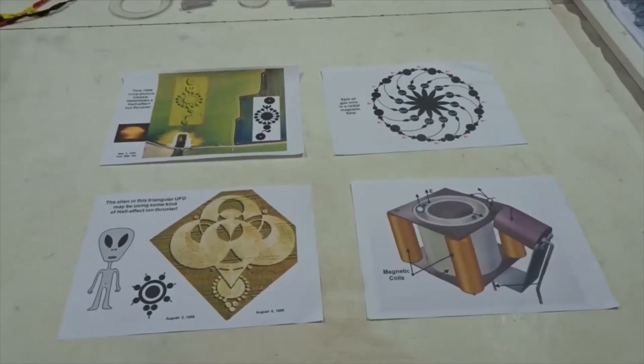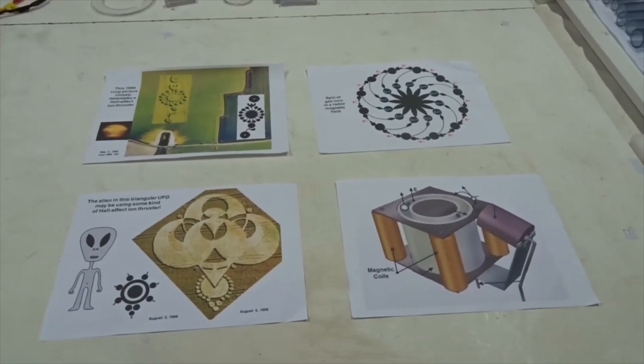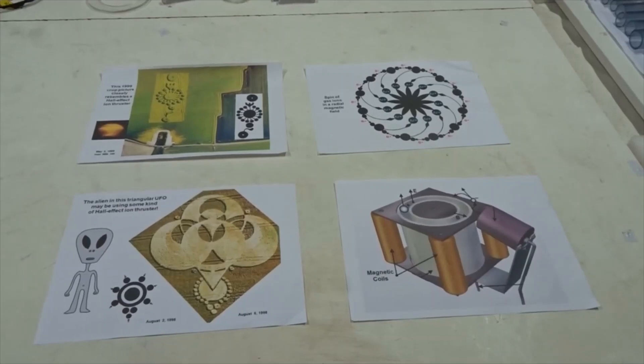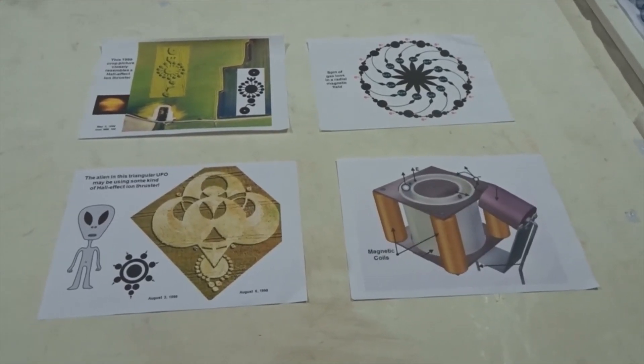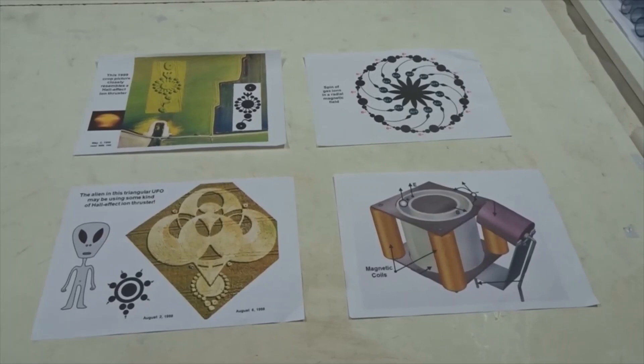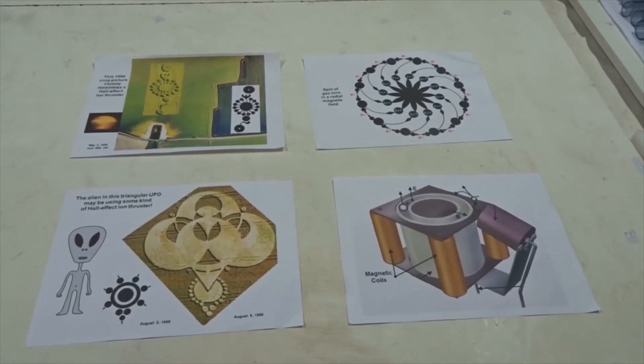What we have studied here today is clearly related to how extraterrestrials fly through space using their ion drives. This subject has been drawn extensively in crop circles. You don't believe me? I'll just show a few examples.